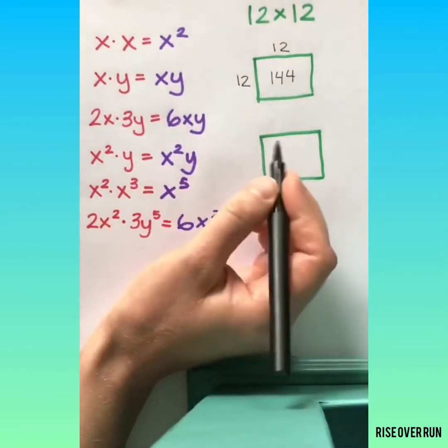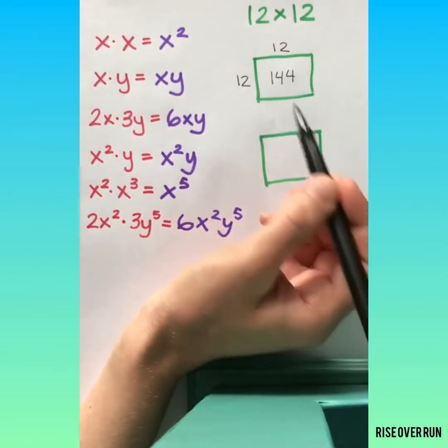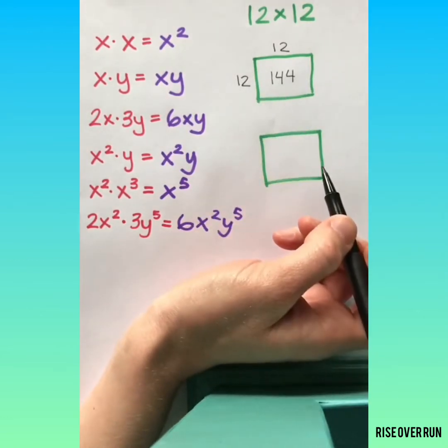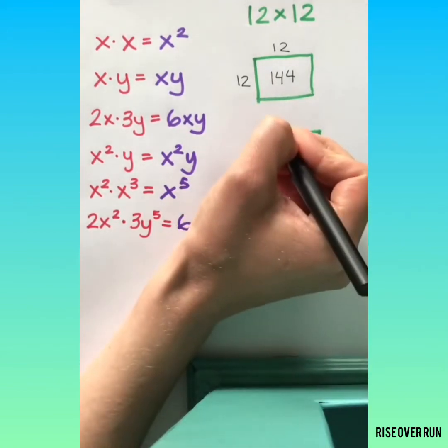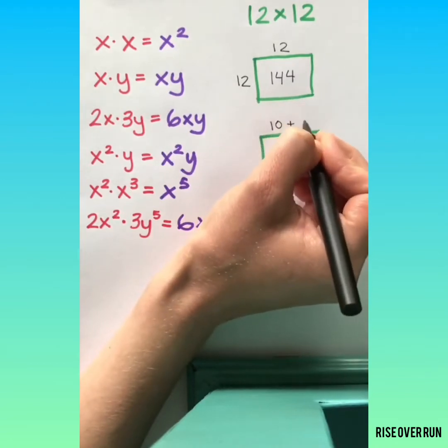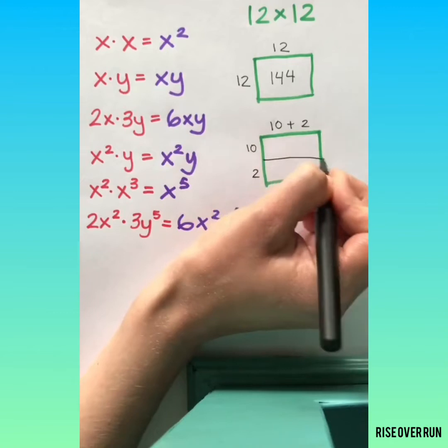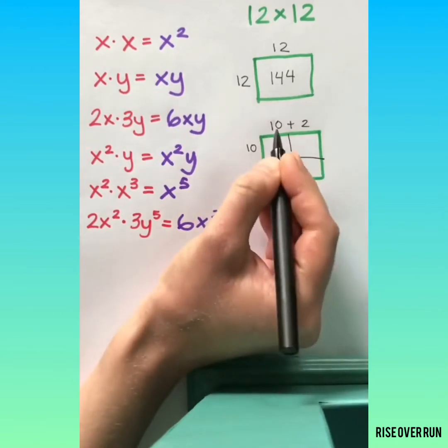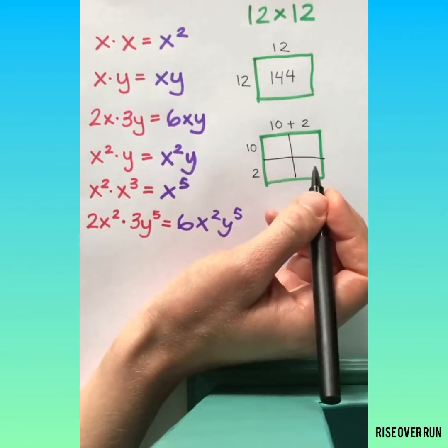Now the reason I like area models is because you can break up numbers and you can apply an area model to lots of different concepts. If I wasn't sure what 12 times 12 was, I could break it up into 10 and 2 and 10 and 2. If I find the area of each of these boxes inside, I can add them together to find the total area.